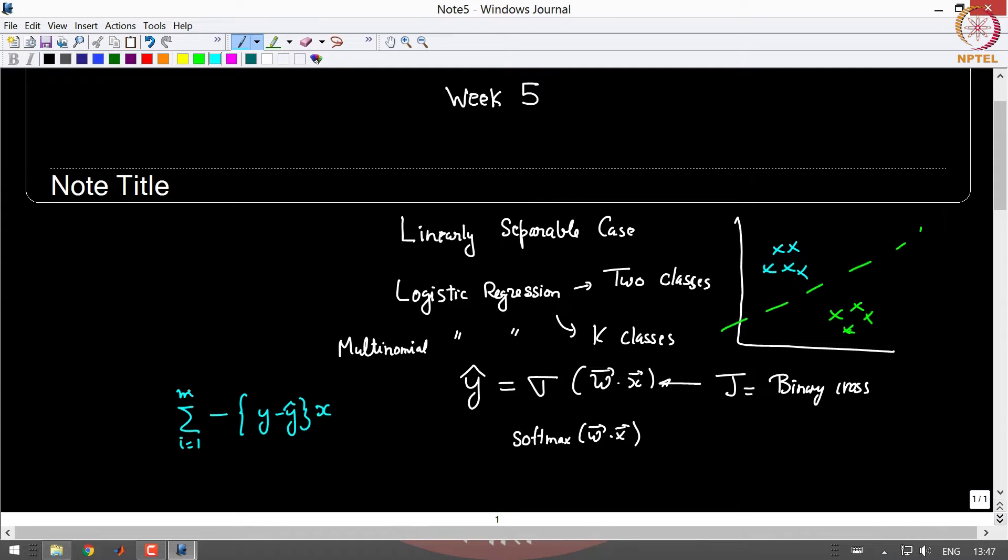This followed our general machine learning paradigm which is you take X, guess a W, get a Y hat, and back propagate. This is what we did in both logistic as well as multinomial logistic regression cases.